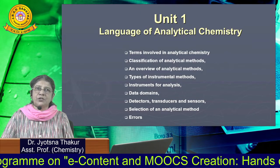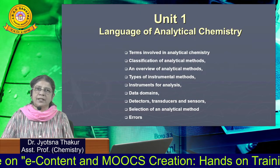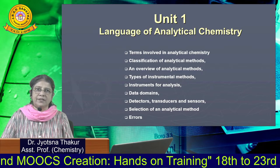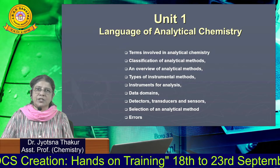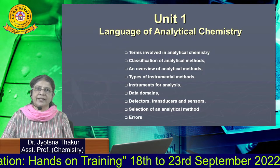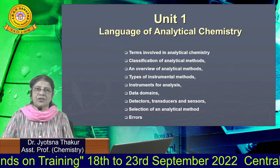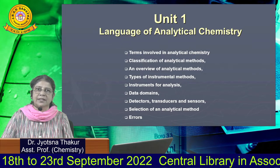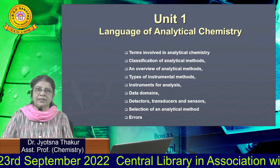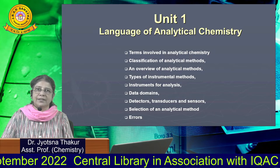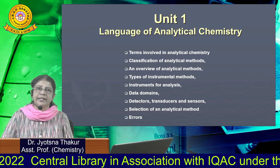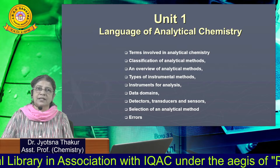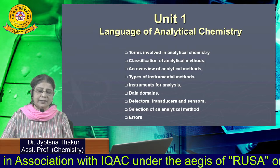The first unit of Analytical Chemistry is Language of Analytical Chemistry, which involves the following points: terms involved in Analytical Chemistry, classification of analytical methods, overview of analytical methods, types of instrumental methods, instrument for analysis, data domain, detectors, transducers and sensors, selection of analytical methods, and errors.